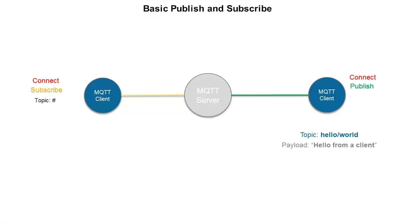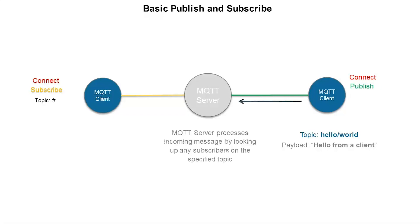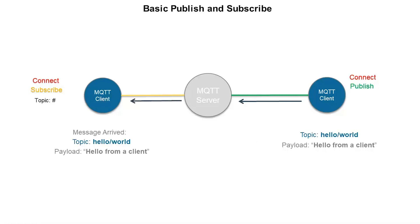Then the right client publishes a message on a topic. The topic is hello/world, and the payload is an ASCII string saying 'hello from a client.' He publishes that message to the MQTT server, which processes the incoming message by looking up any subscribers on that specified topic. Since we had an MQTT client subscribed on wildcards, the MQTT server delivers that message — the topic hello/world and the payload 'hello from a client.' That's a simple but clear example of how publish and subscribe works on both the topic and the payload.